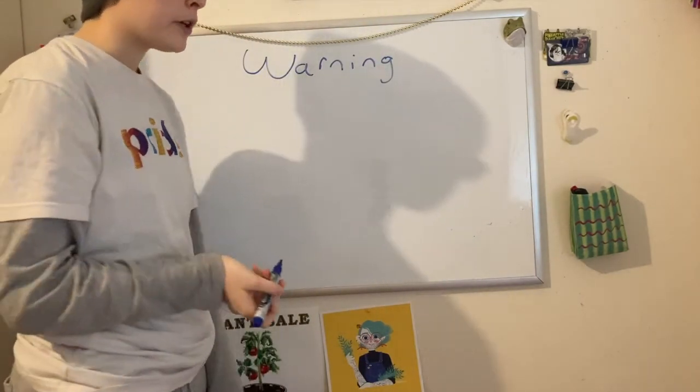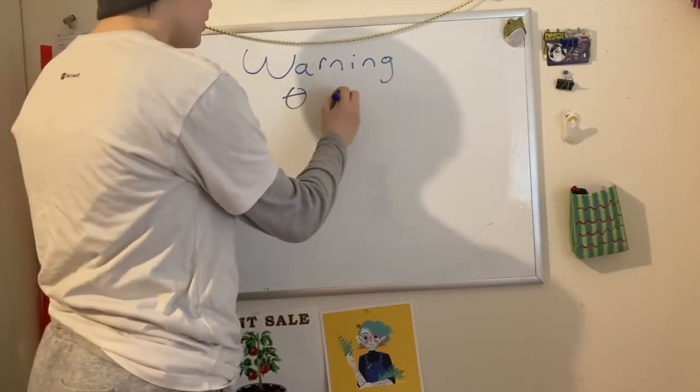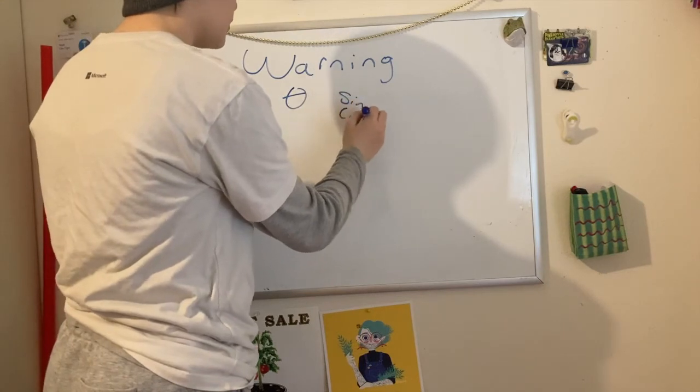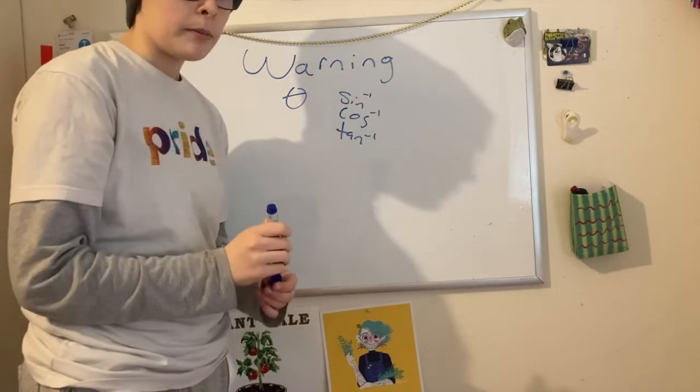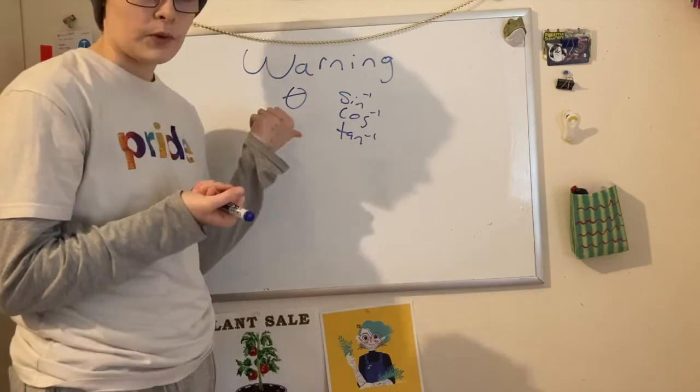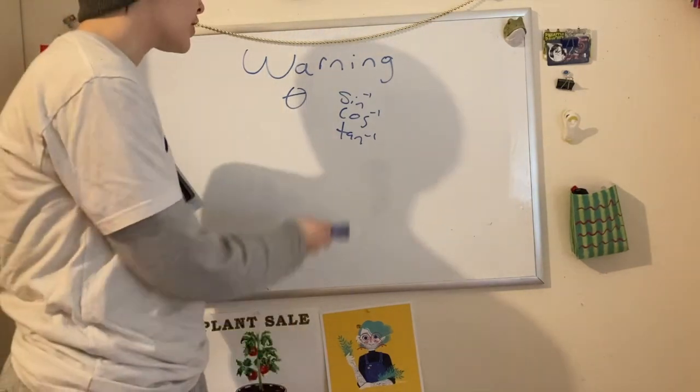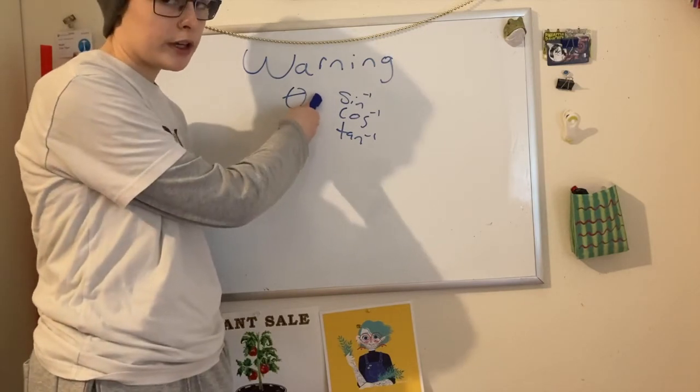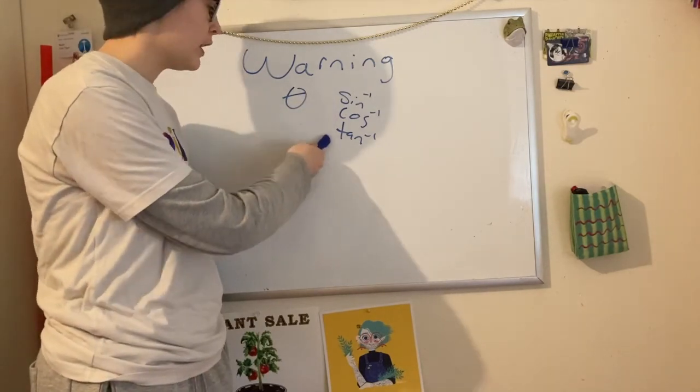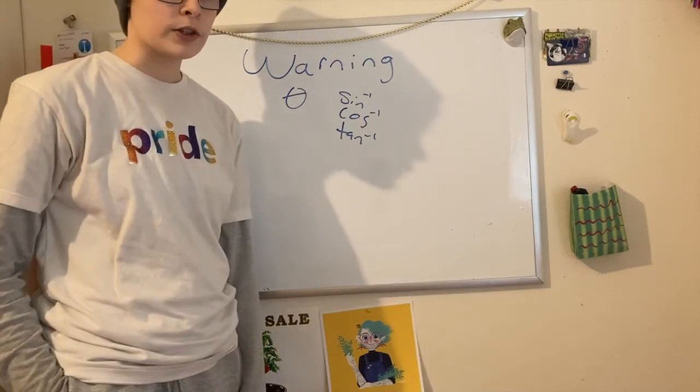Finally, a warning. If you're ever trying to find angle θ using sine, cosine, or tangent inverse, you should remember that the sine, cosine, and tangent will have two angles. And this is true for like any angle. There's always going to be two angles that have the same sine, two angles that have the same cosine, two angles that have the same tangent. And that concludes the unit circle.